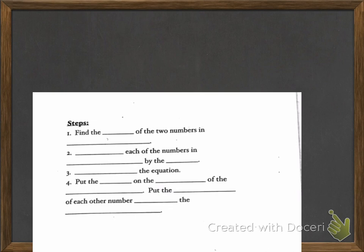The next thing I want you to do is go directly across on your page. We're going to fill in the blanks for the steps for this top part. Where it says steps, find the—we're going to put in our first blank GCF of the two numbers in the example.